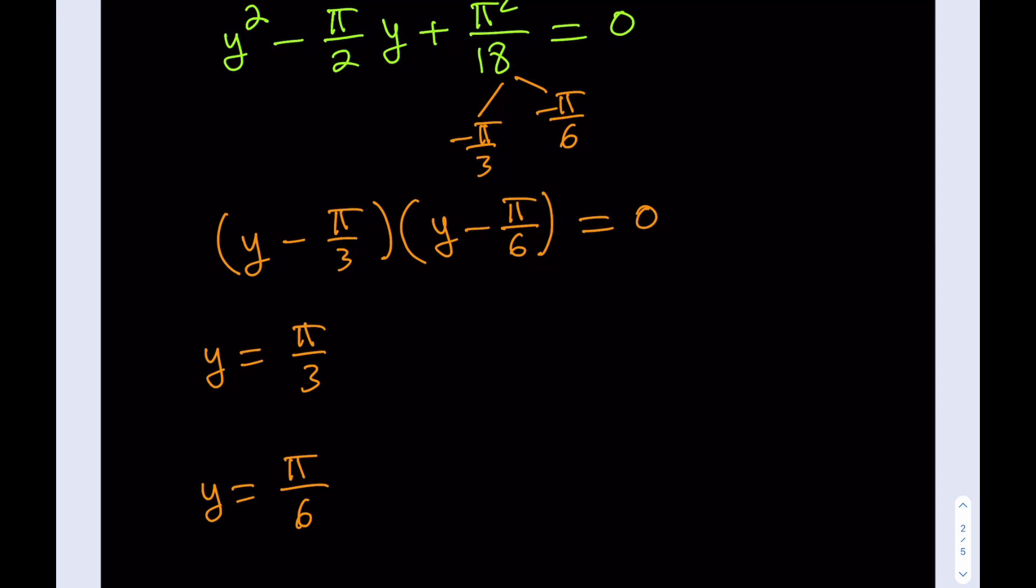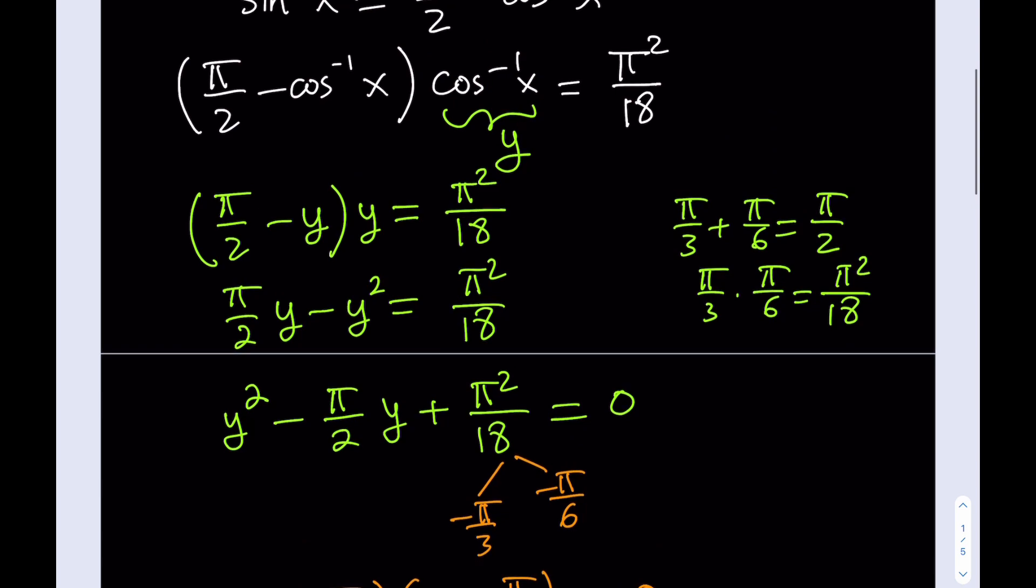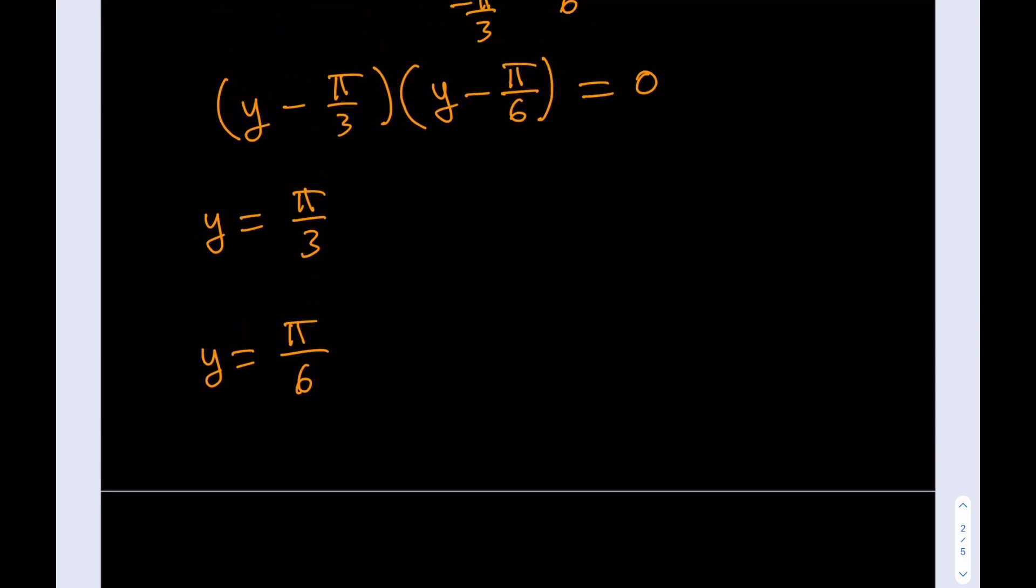We were able to find the value of y, but we're not looking for y. We're looking for x. What is x? We've got to go back and substitute. Cosine inverse of x is equal to y. So y equals cosine inverse of x for both solutions.